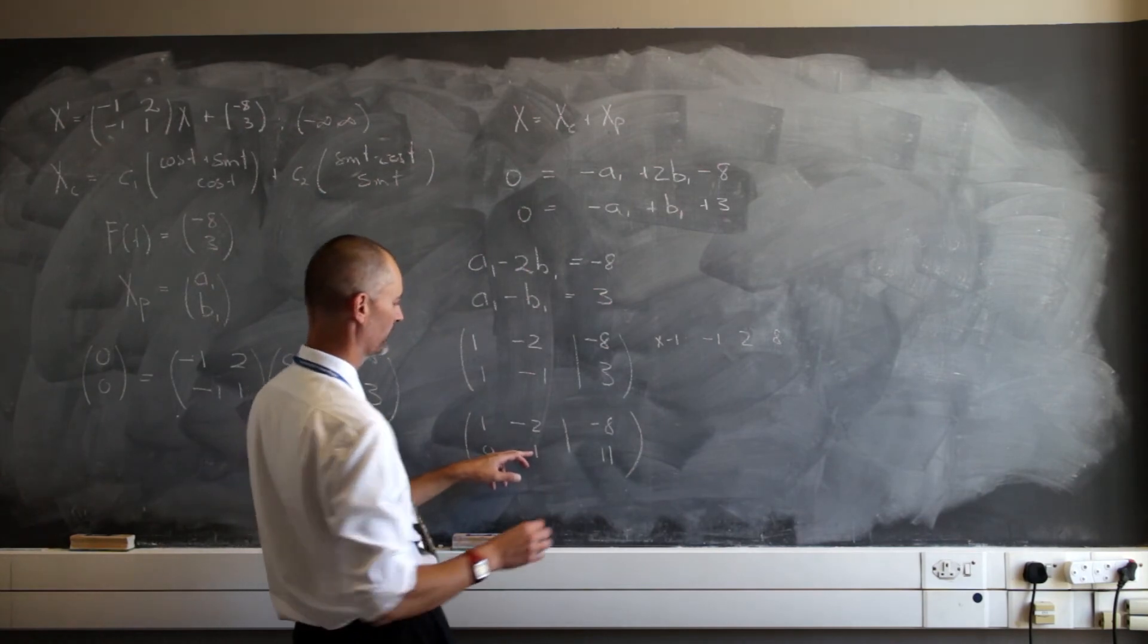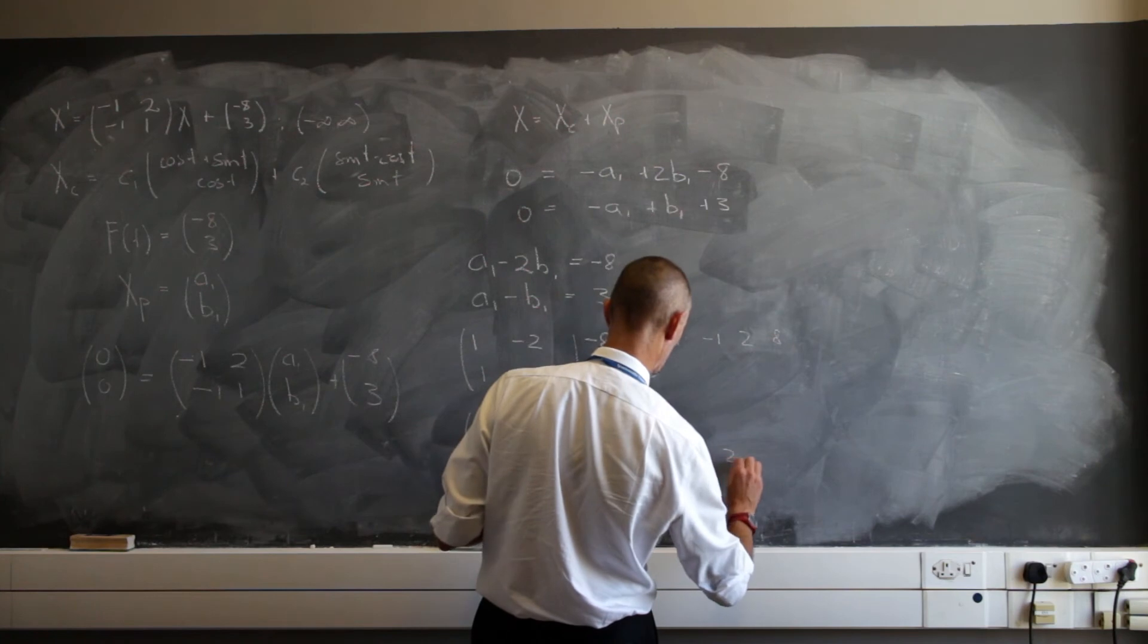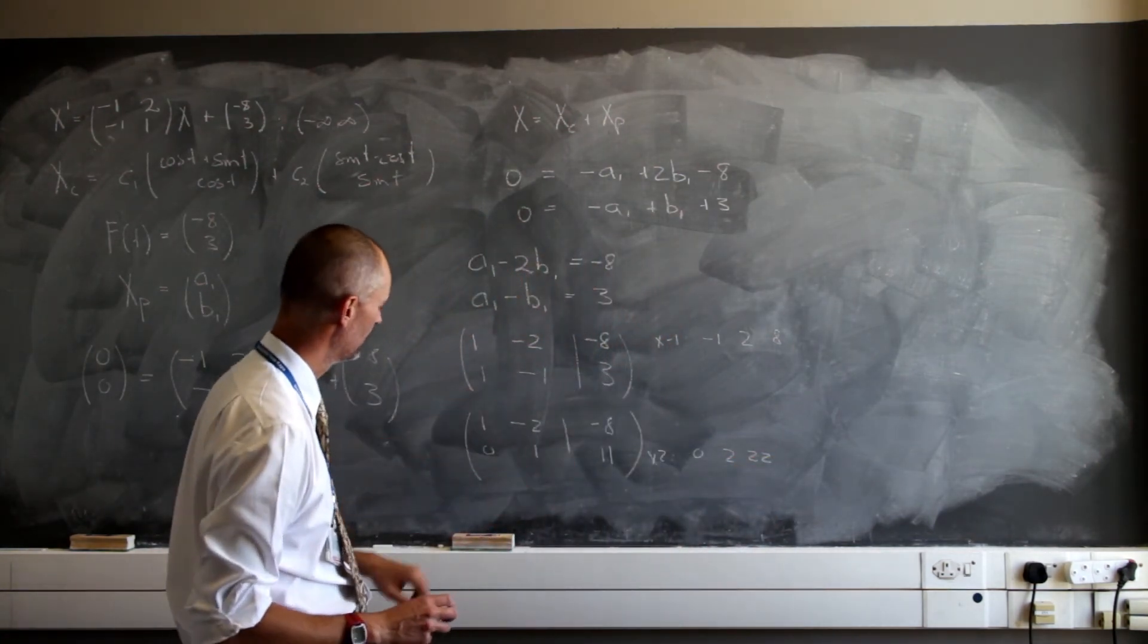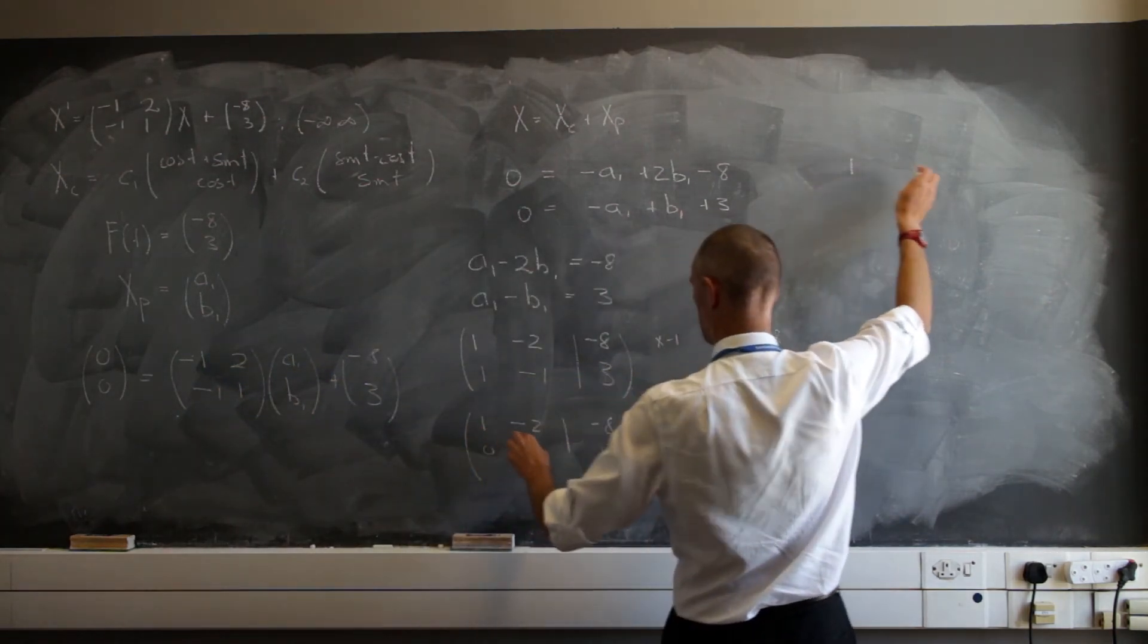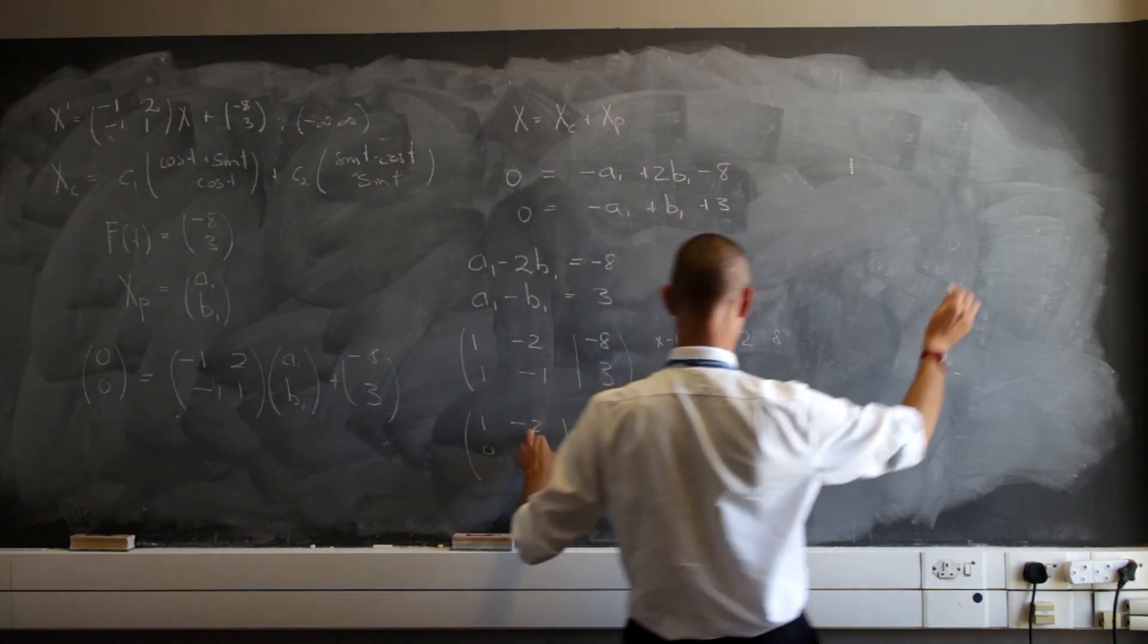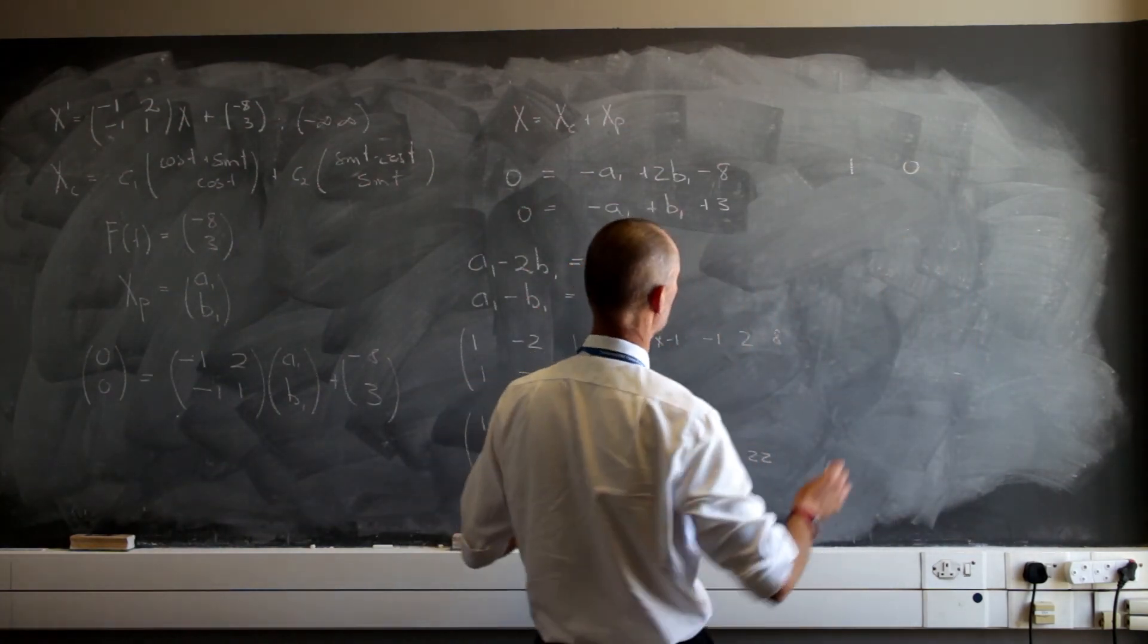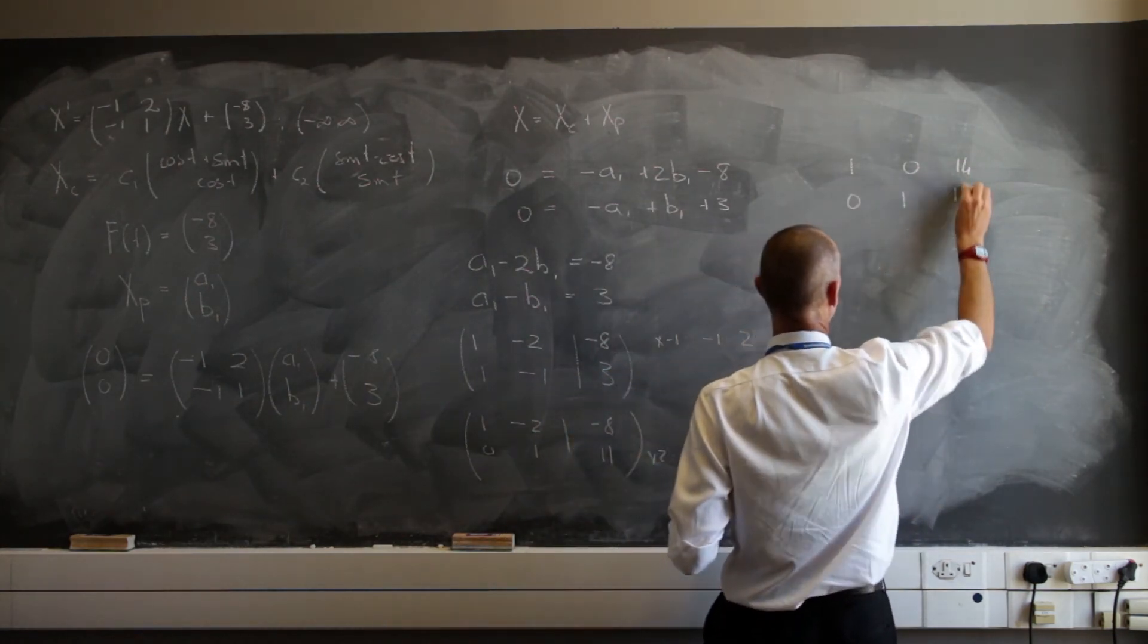Now I can multiply this by 2. If I multiply that by 2, I get 0, 2, and 22. And I just have to subtract that. Let's have a look. So I'm going to be left with 1, 2, that's a 0, and 22, that leaves me with 14. And 0, 1, 11.